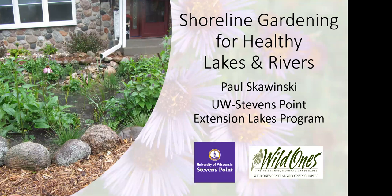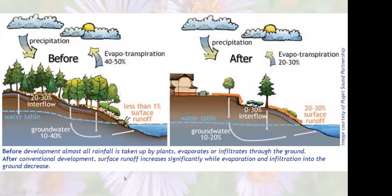Let's get started with part one on rain gardens. This slide shows a landscape before and after human development. On the before side, there's a lot of variation in topography — high spots and low spots — with a lot of vegetation covering the land. When heavy precipitation falls, a lot of the energy is absorbed by vegetation before it hits the ground, decreasing erosion potential. Those low spots allow water to pool, slow down across the landscape, and soak into the ground over a short period of time.